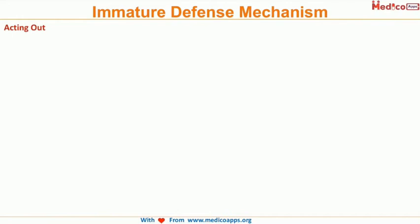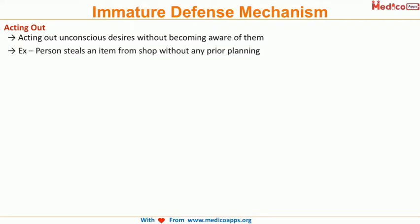Let us move forward and look at some of the immature defense mechanisms. One is acting out. Acting out is unconscious desires acted upon without the person being aware of them. For example, a person steals an item from a shop without planning. This acting out defense mechanism forms the basis of impulse control disorders. The person is unaware of his desires and unconsciously acts on those desires — this is called acting out.